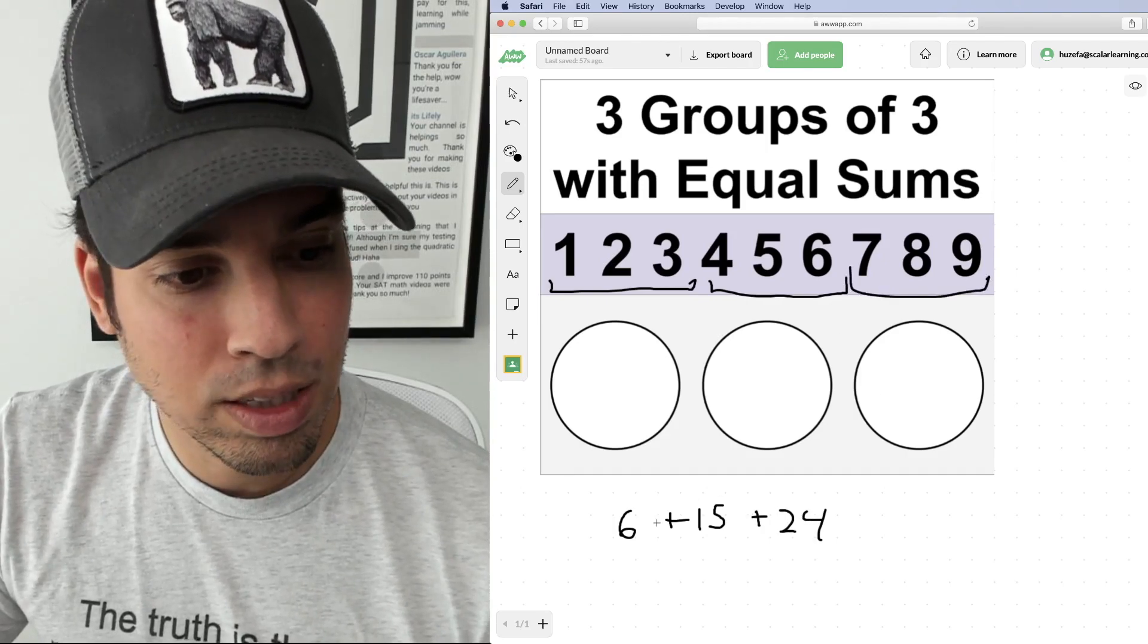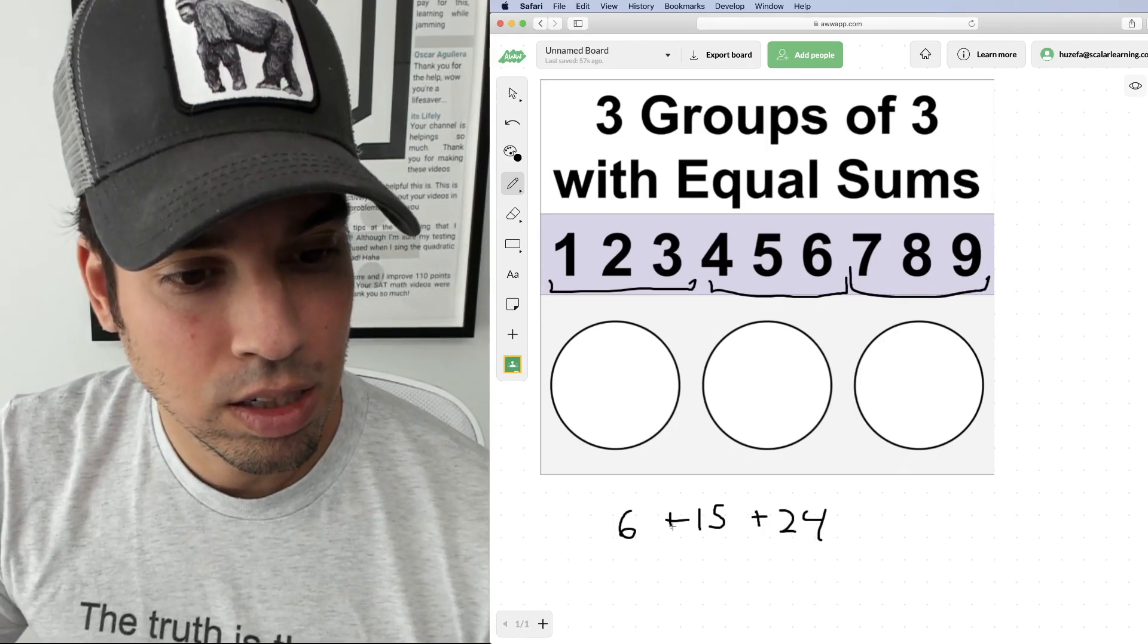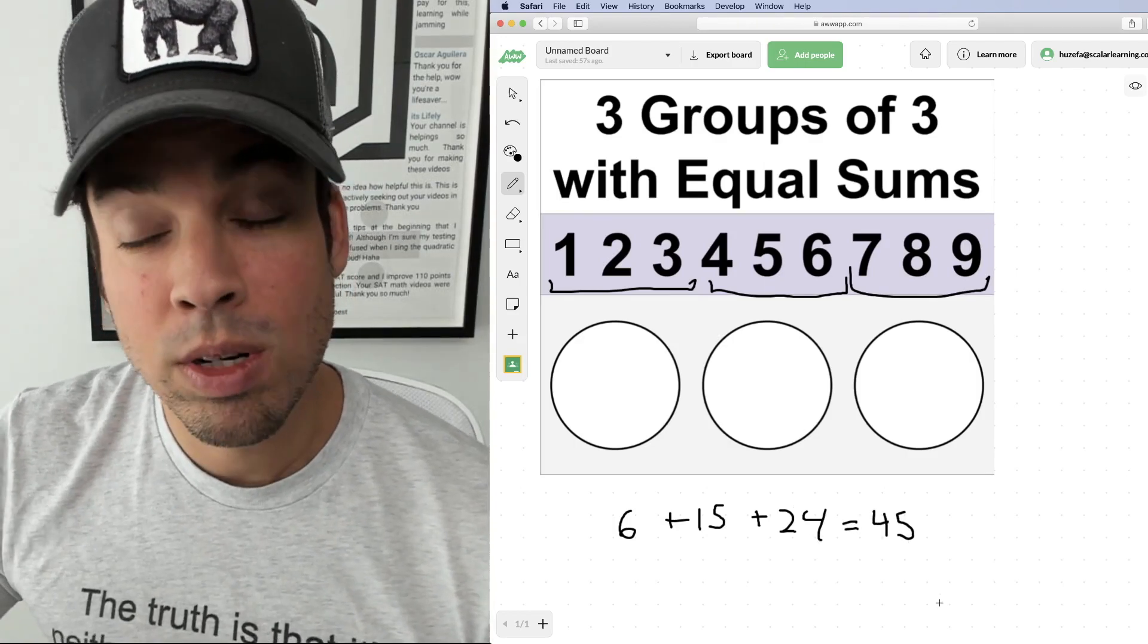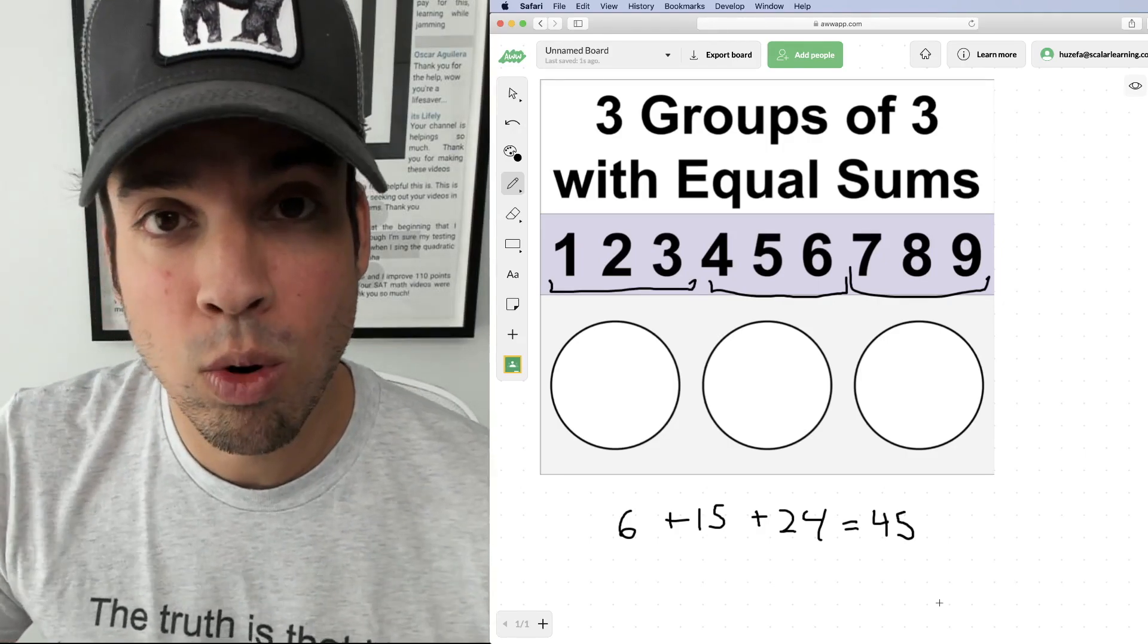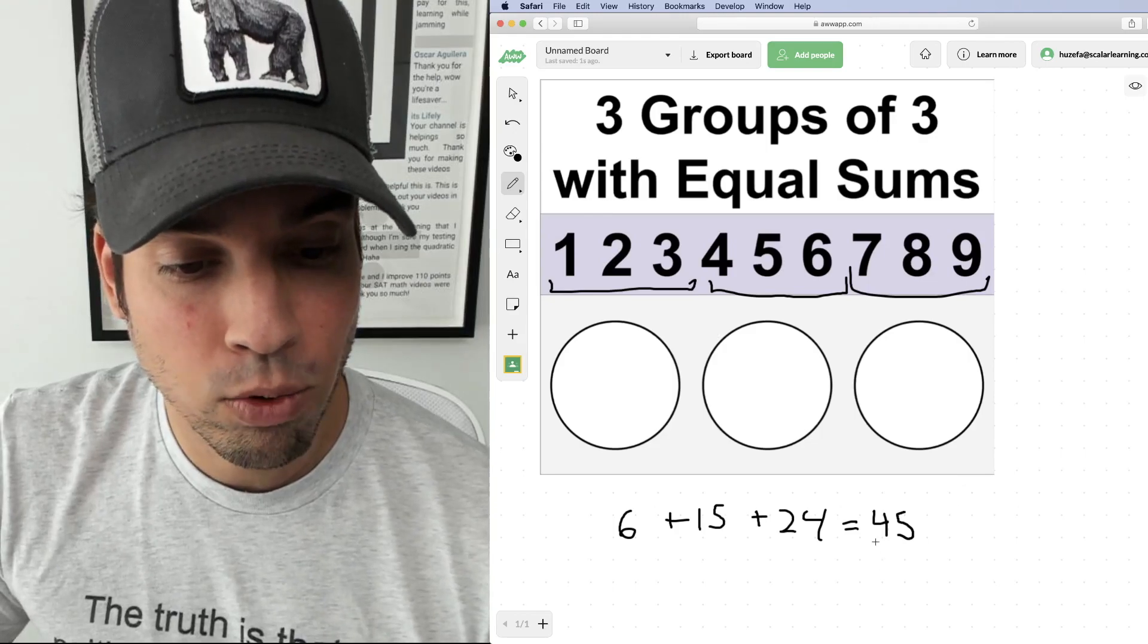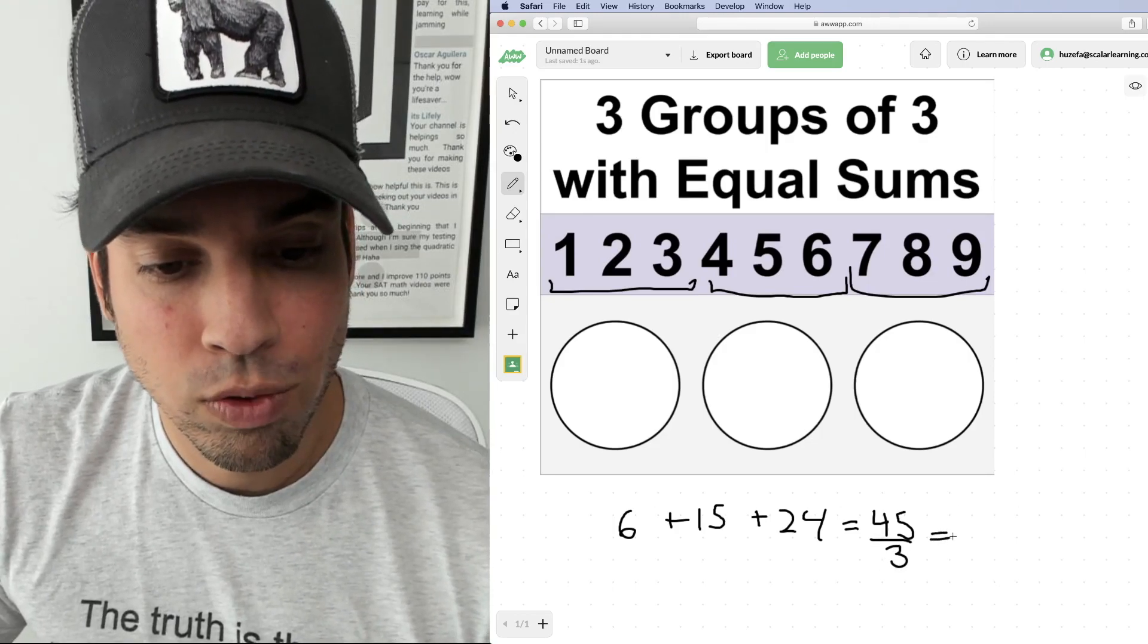So if we add them up like this, we get six plus 24 is 30 plus 15 equals 45. So now we know that the total equals 45. What's the sum of each group? It must be 45 divided by three, which of course is 15.